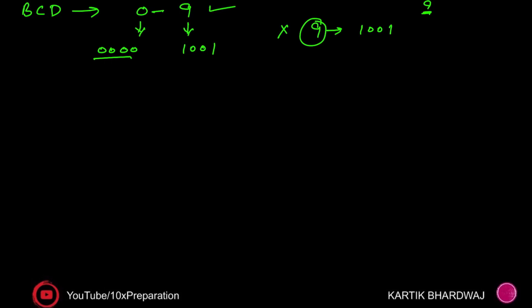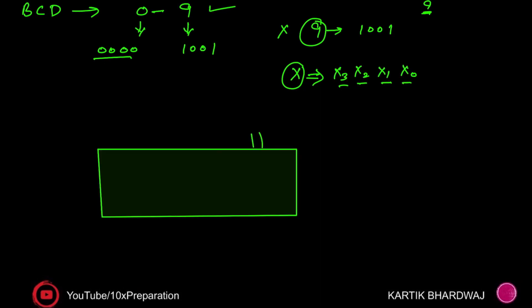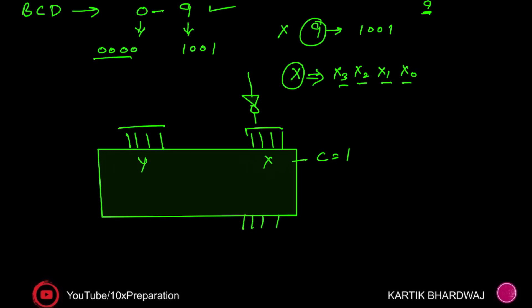To implement this, we need to draw a subtractor. We take a BCD number X, convert it into its 4-bit binary BCD form, and use a binary adder. We take the complement of the input number, pass it through the circuit, set carry-in to 1 (giving two's complement), and put 9 on the other input. The binary adder will subtract X from 9 to produce the result.